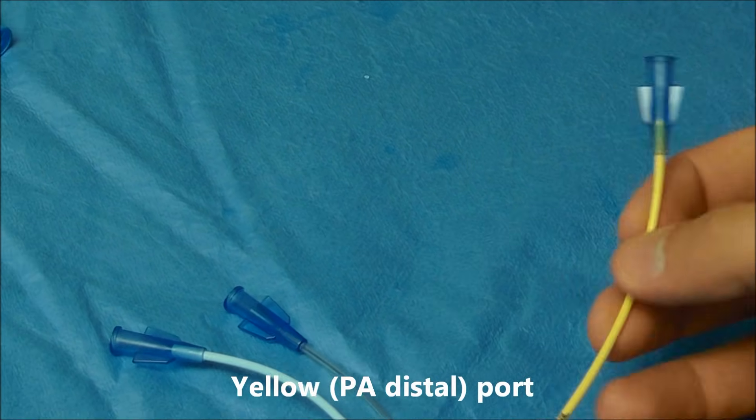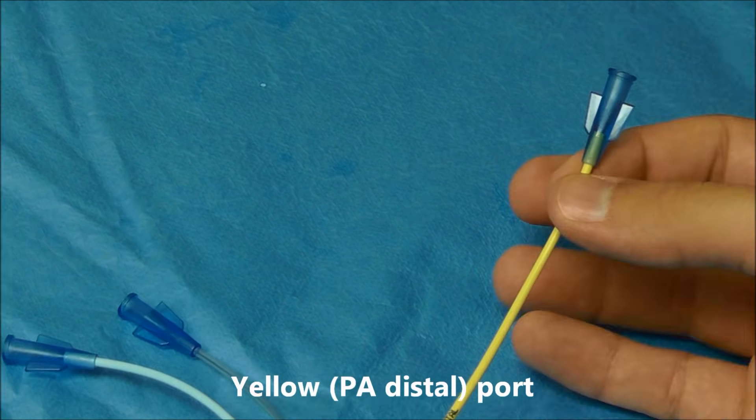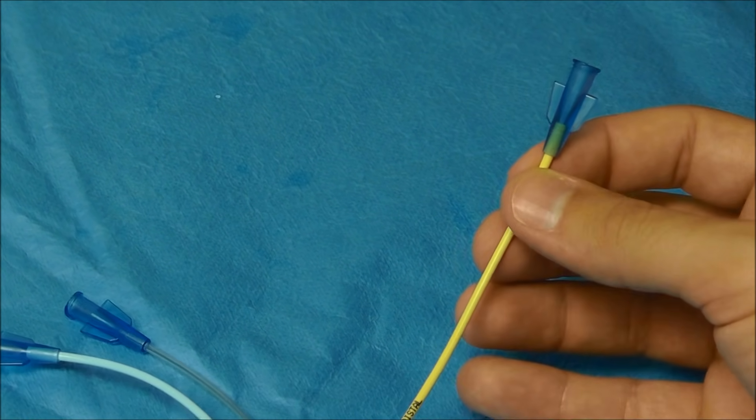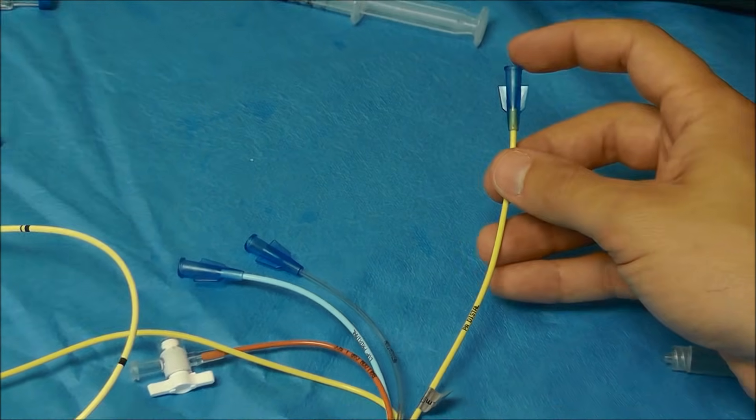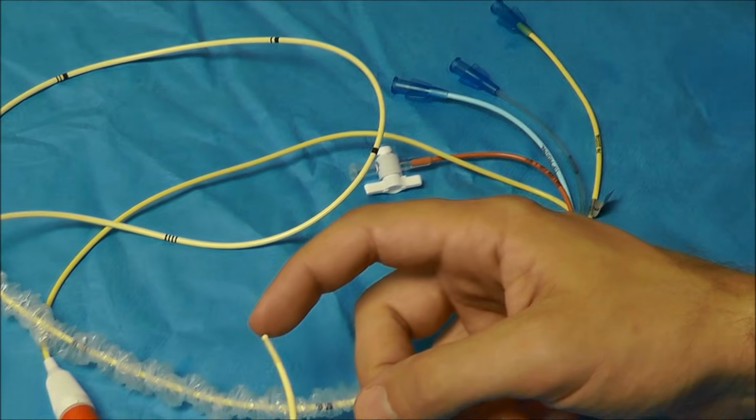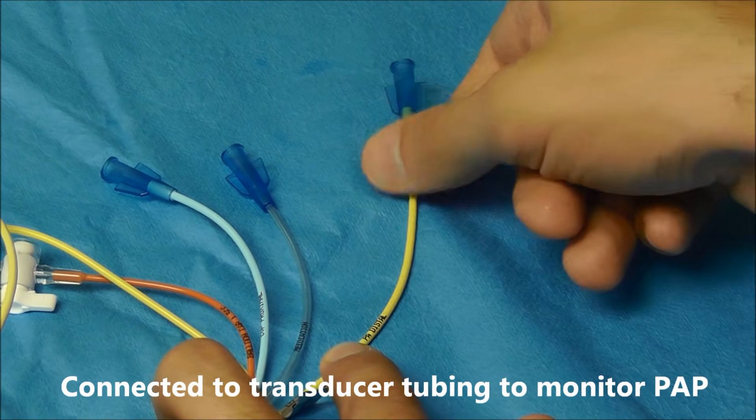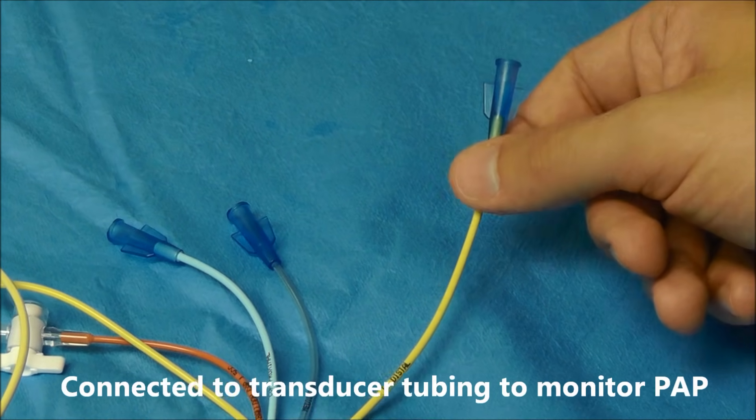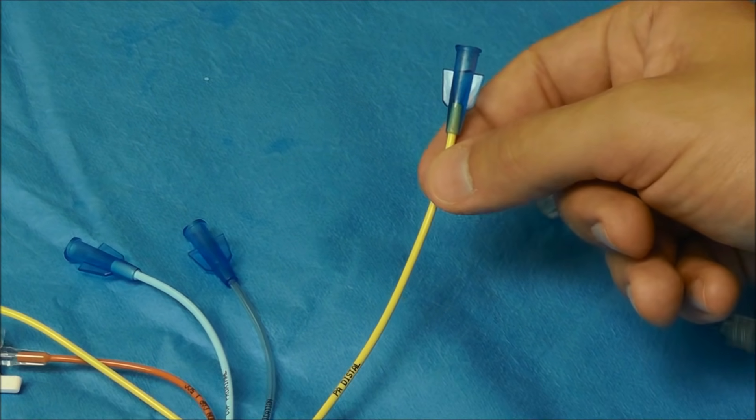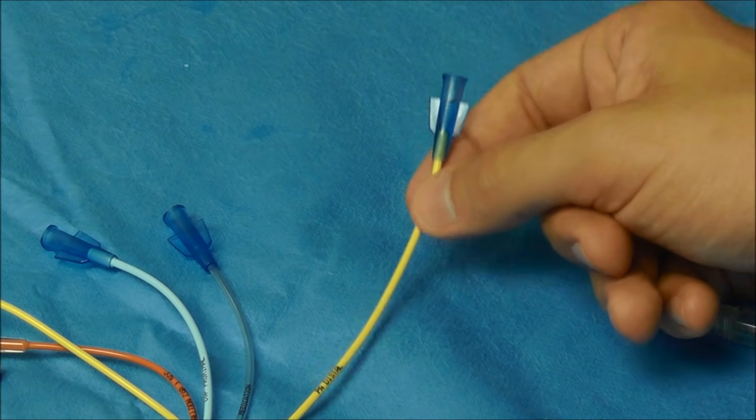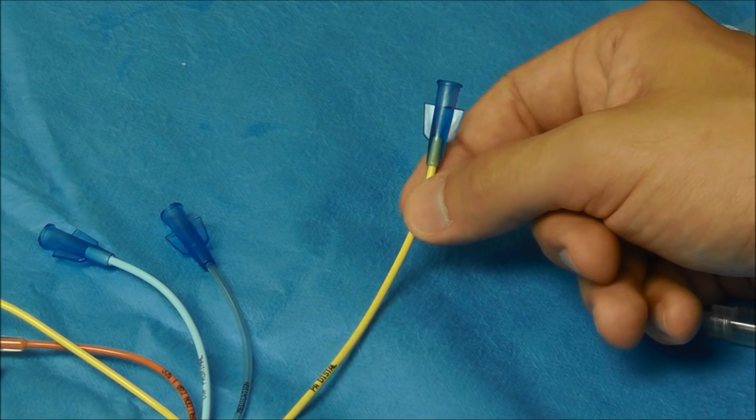The yellow port is always called the PA distal port. And what this means is this lumen here goes all the way to the distal tip of this catheter. The connection to this yellow port is you're going to connect transducer tubing. And the purpose of that is you're going to use that to monitor pulmonary artery pressure and wedge pressure.